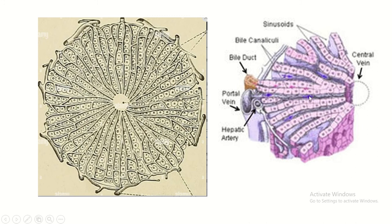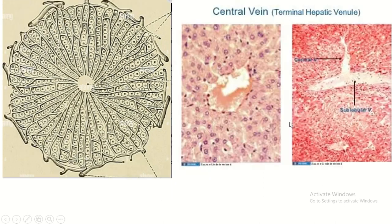Blood from the portal vein and hepatic artery enters the hepatic sinusoids, which are present in between two hepatic laminae. The sinusoidal blood is mixed in nature — both oxygenated and deoxygenated blood mix here, because oxygenated blood comes from the hepatic artery and deoxygenated blood comes from the portal vein. This blood drains into the central vein, and then from the central vein into the sub-lobular vein.